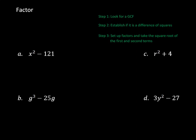Since the answer to all three questions is yes, step three is to set up the factors and take the square roots. We set up our two sets of parentheses. The square root of x squared is x, so that goes in the first spot. The square root of 121 is 11, so that goes in the second spot. One factor gets a plus and one gets a minus sign.